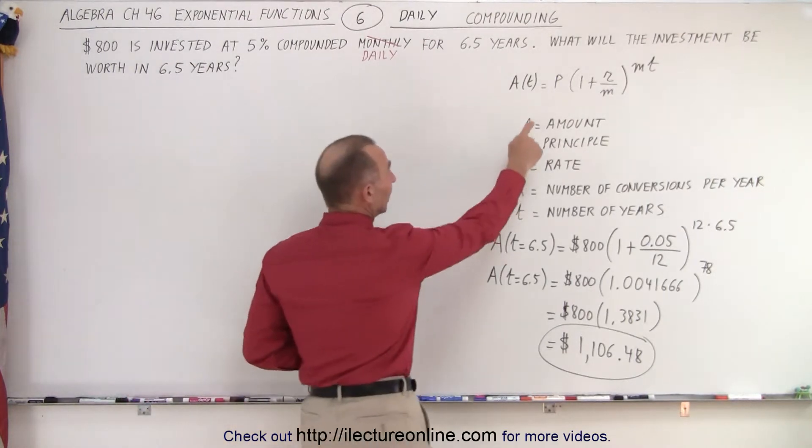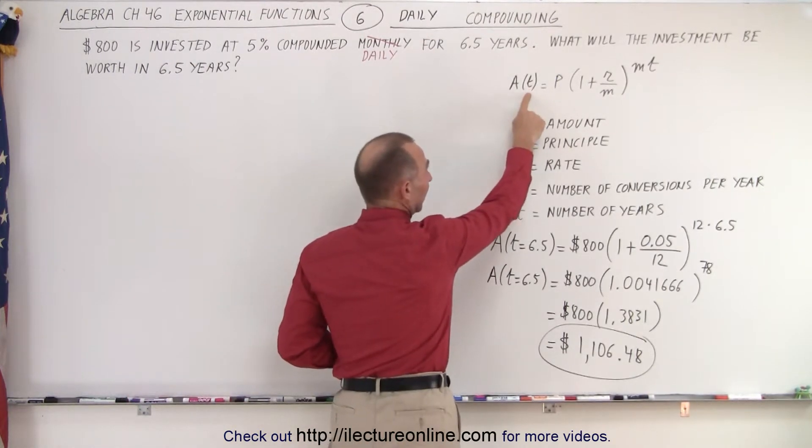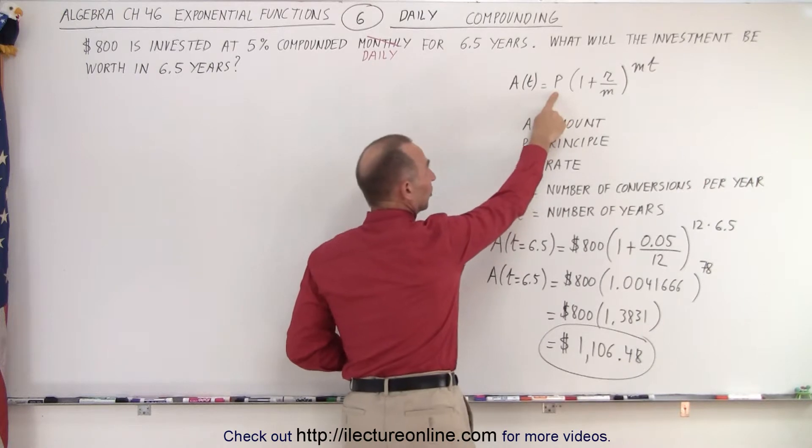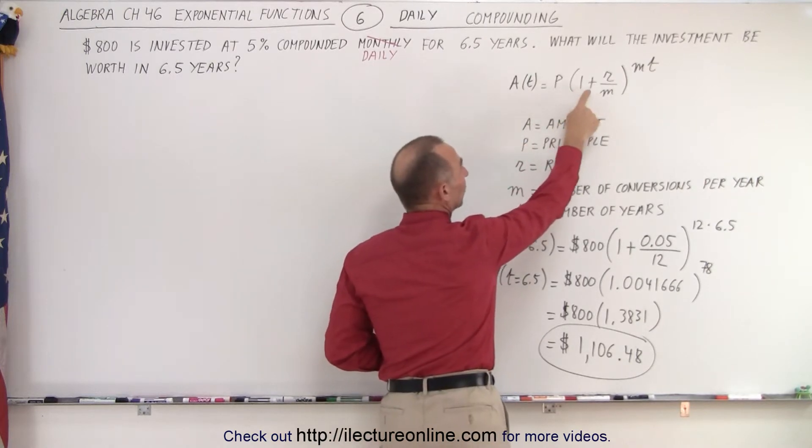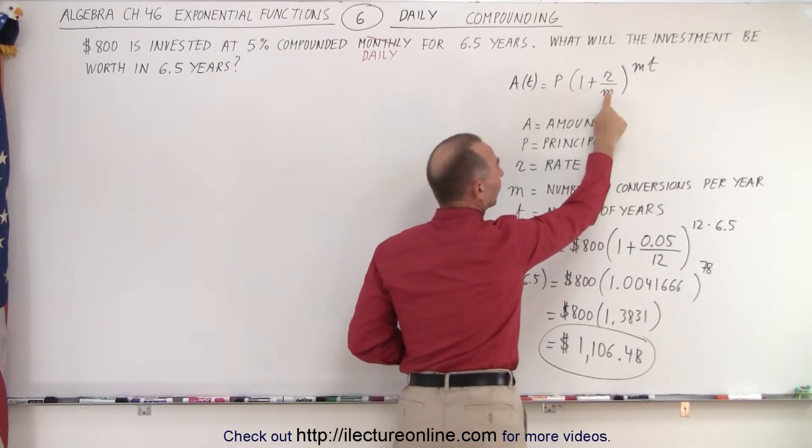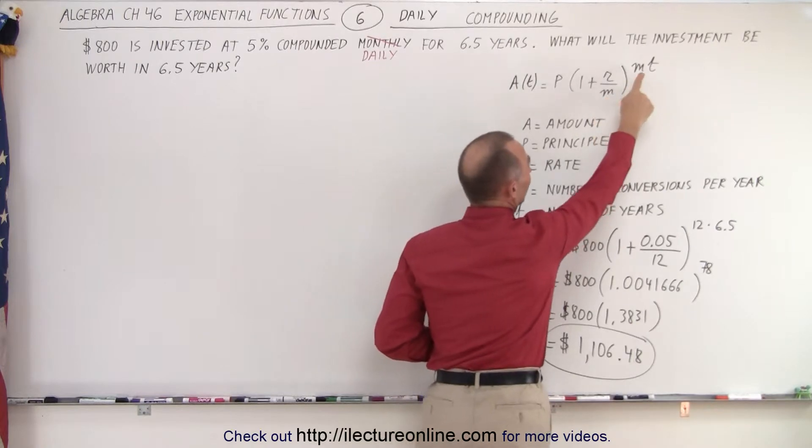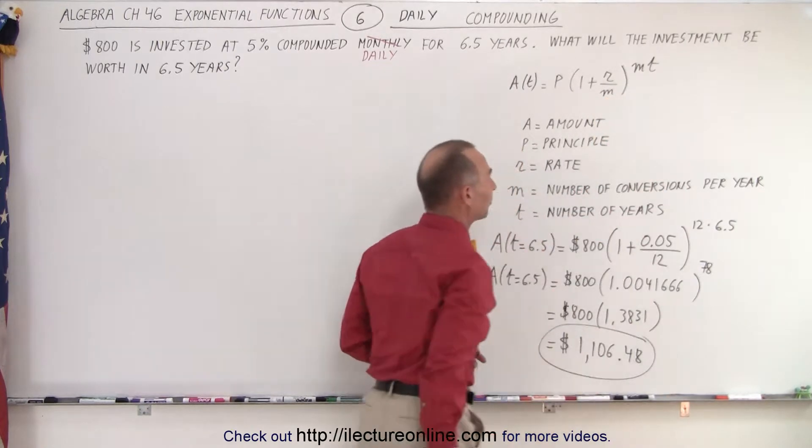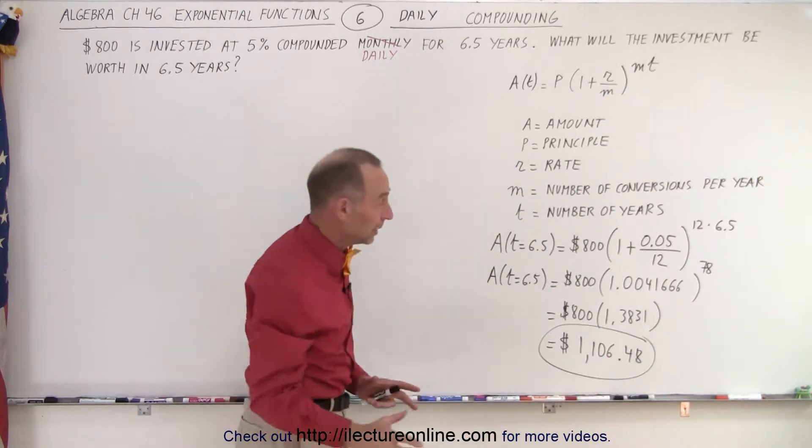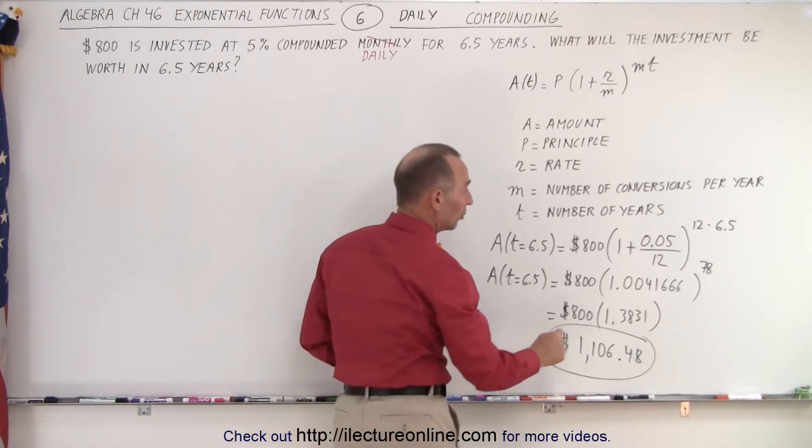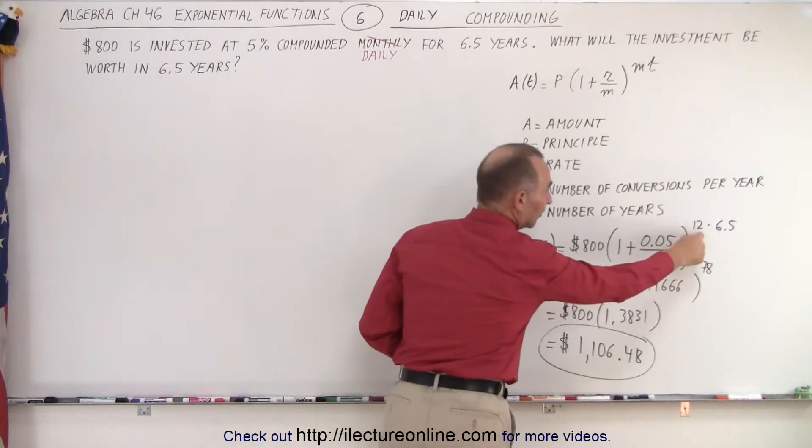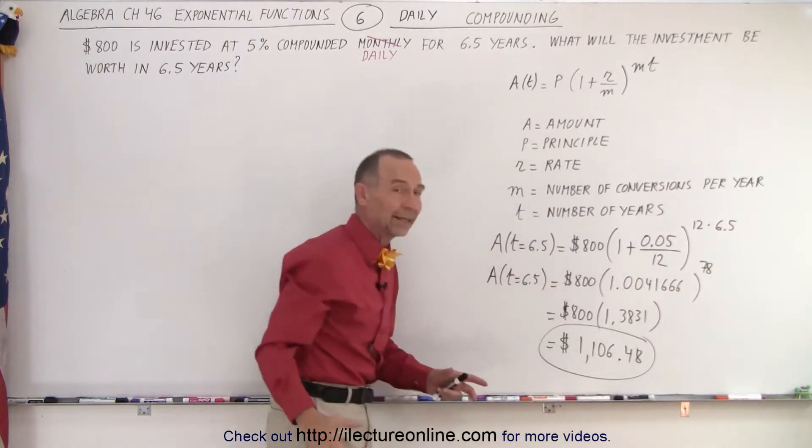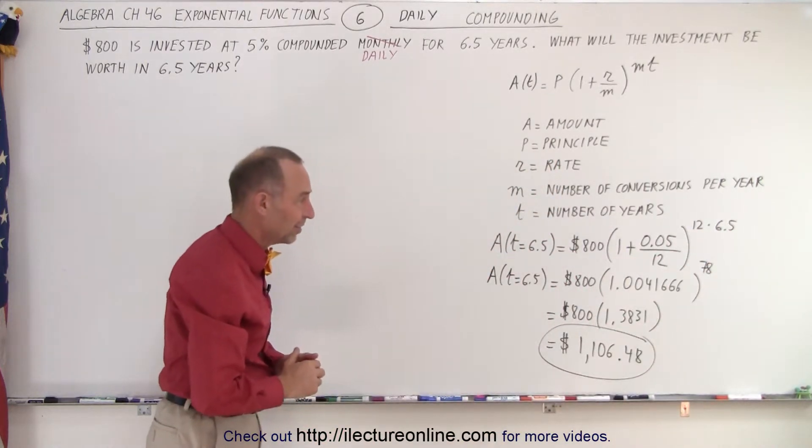The equation is the same. The amount you end up with after a certain amount of time has elapsed is equal to the original principle times 1 plus the rate over the number of conversions per year, times the number of conversions per year times the number of years. And when we did monthly compounding, notice there were 12 months in a year, and so it was 12 times 6.5 because we had it invested for 6.5 years.